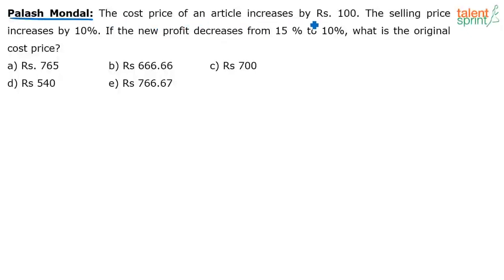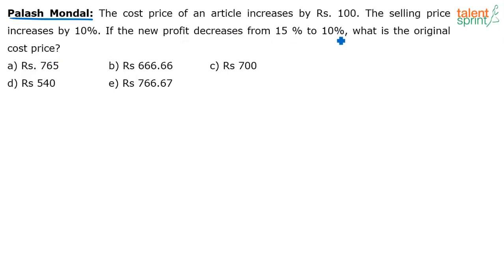The cost price of an article increases by rupees 100. The selling price increases by 10%. The new profit decreases from 15% to 10%. What is the original cost price?